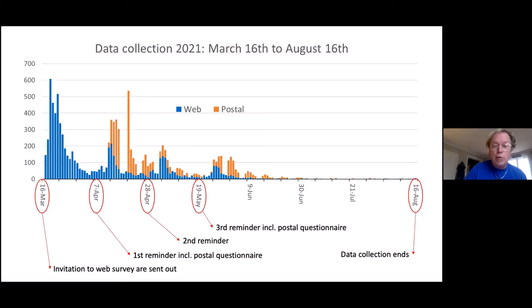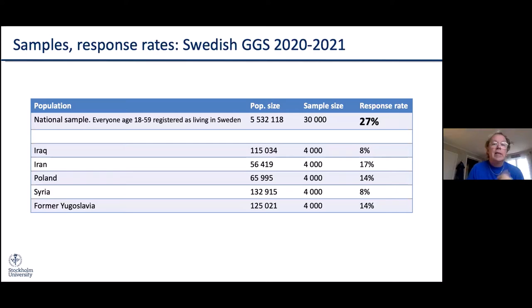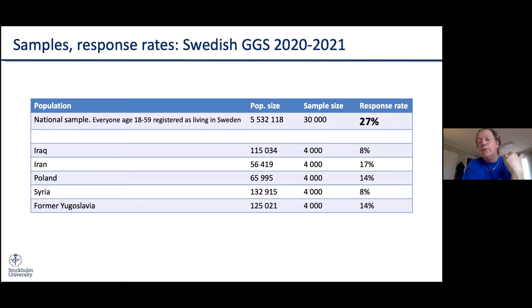We have now received all the survey responses. The response rate is half of what we had last time when we were already quite disappointed — now it is 27%. We already knew from the outset it would be something like this, and we still think we needed this data. You can see the five biggest immigrant groups in Sweden in the age range: foreign-born people from Iraq, Iran, Poland, Syria, and former Yugoslavia. The response rates for these groups are even lower — for those who have been in Sweden quite some time, it's about half that of the Swedish-born, and for the most newly arrived groups from Iraq and Syria, it is even half of that.